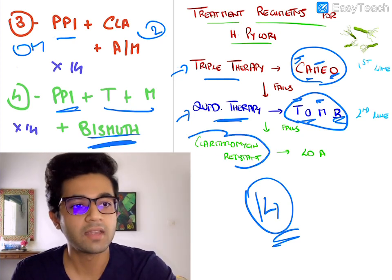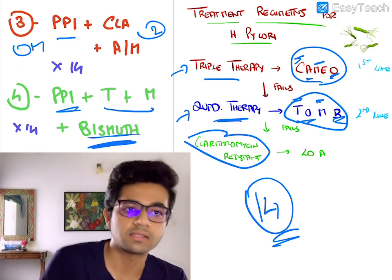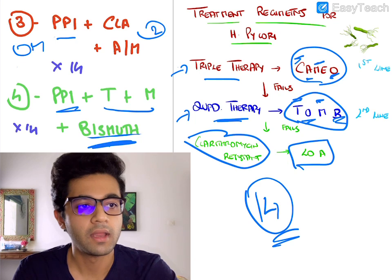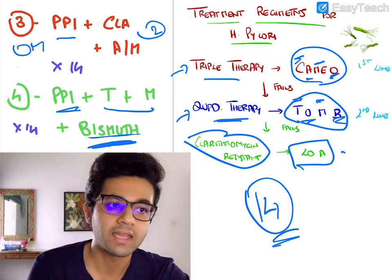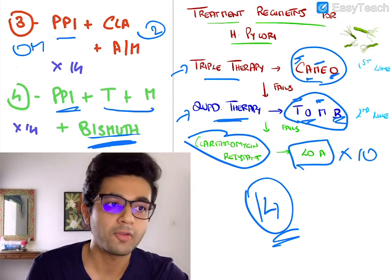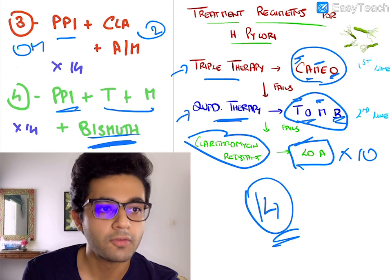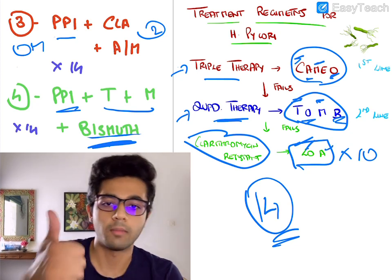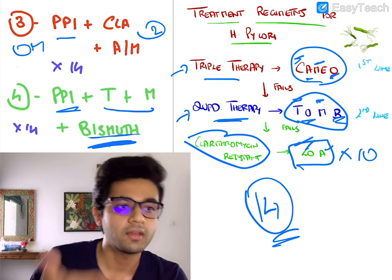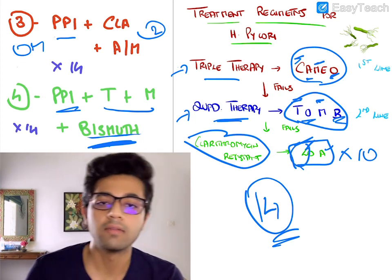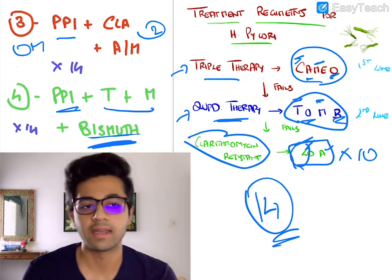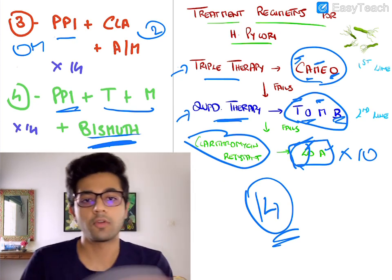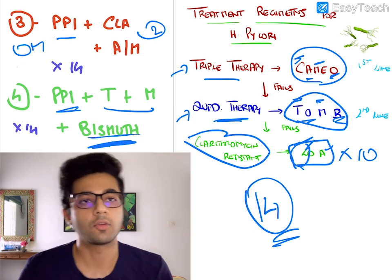In case we identify a clarithromycin-resistant H. pylori strain, we go for a regimen called the levofloxacin regimen, which is given for only 10 days. This includes levofloxacin, a PPI (omeprazole), and amoxicillin. So amoxicillin and omeprazole are kept, and levofloxacin is added instead of clarithromycin. In case of clarithromycin-resistant H. pylori, levofloxacin is used instead of clarithromycin.